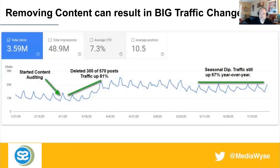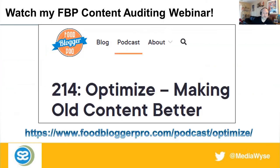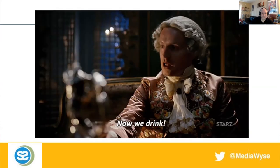Removing content can result in big traffic changes. Here's a simple example: we started content auditing in March, deleted almost half the site's content, and traffic immediately went up 81% — likely influenced by quarantine traffic as well. But even after the quarantine lifted, traffic was still up 67% year over year. I wish I had more time today — I've got a whole full webinar and podcast on content auditing, and I definitely urge all of you to take a look at the link provided. And now we drink.